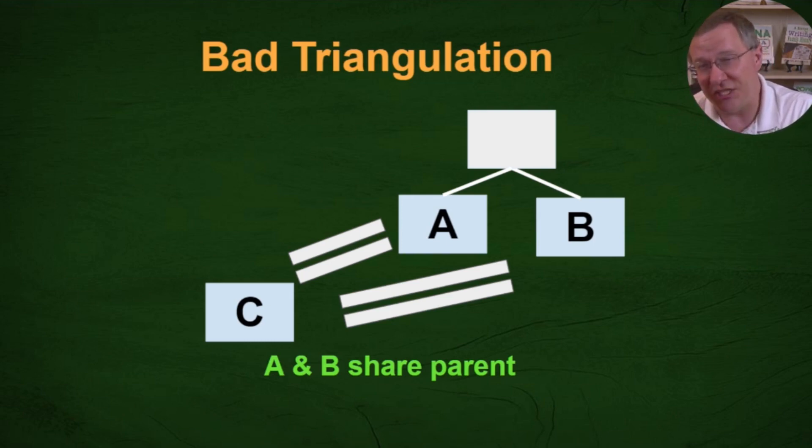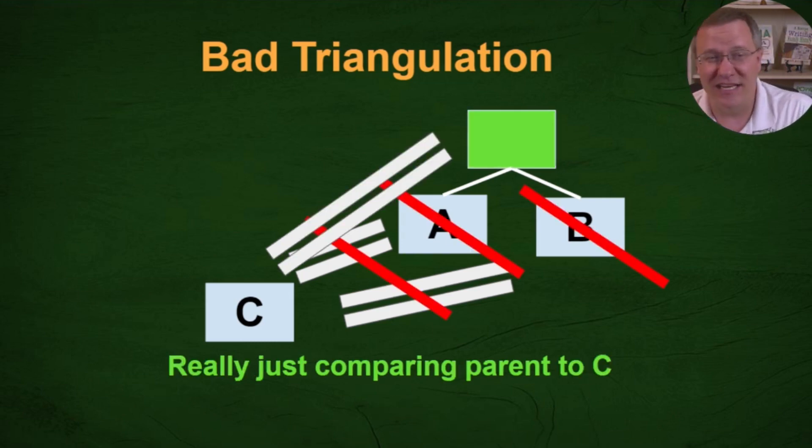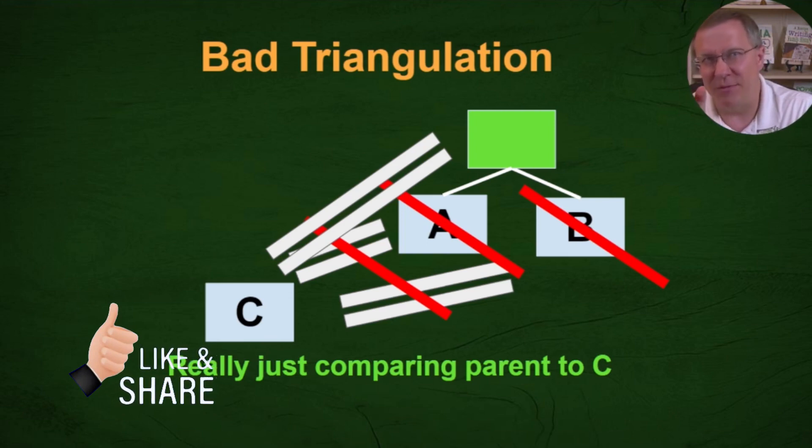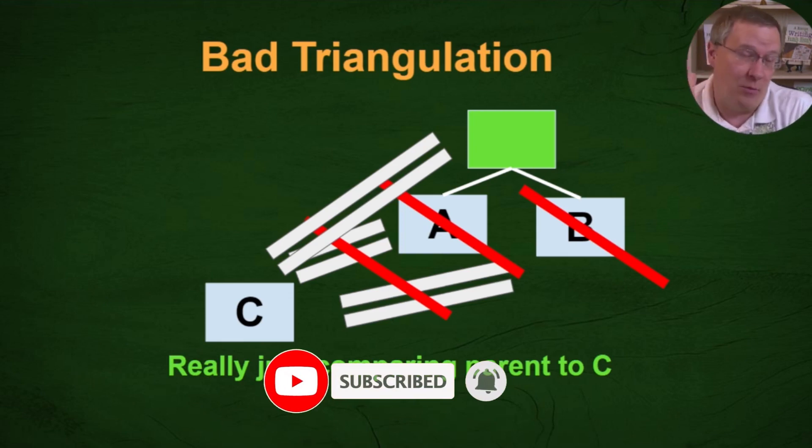Now A and B they share a parent as we just said. So why do I say this is bad triangulation? Well because you're really just comparing C to the parent of A and B. Now you are comparing it to A and B individually but A and B got that segment from the exact same person and it was their dad or their mom.